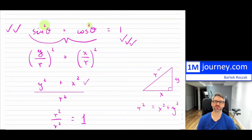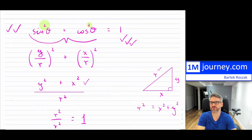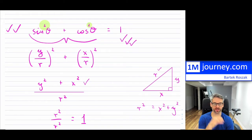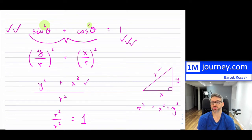This is called the Pythagorean identity for these ratios. And it is true no matter what the actual angle is. You can substitute those angles in and you'll see that this is always going to be the case. That's what a trigonometric identity is.